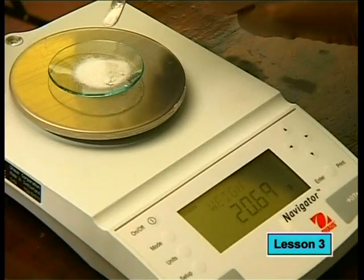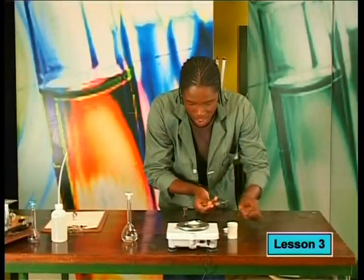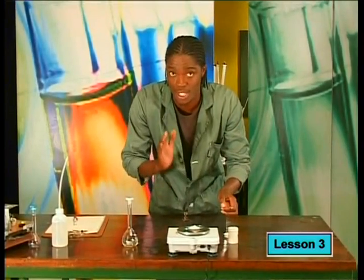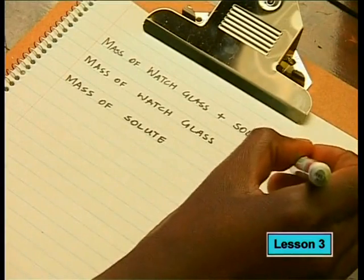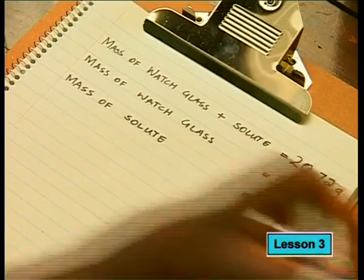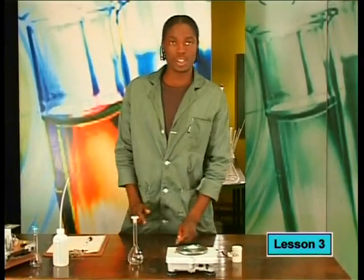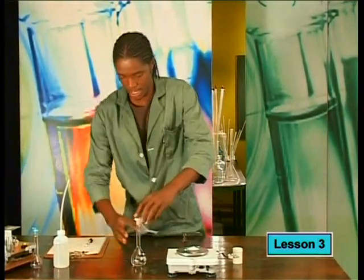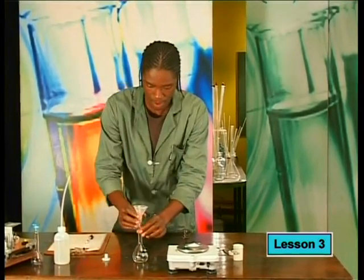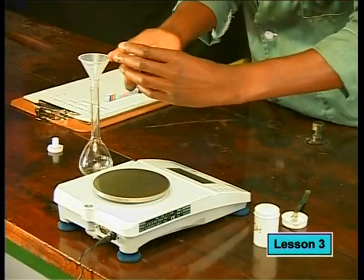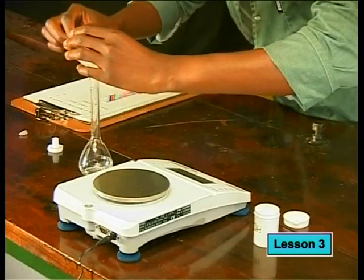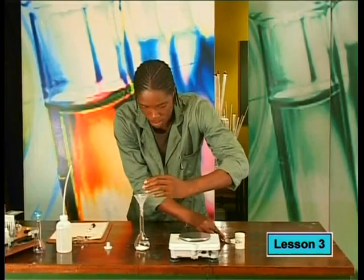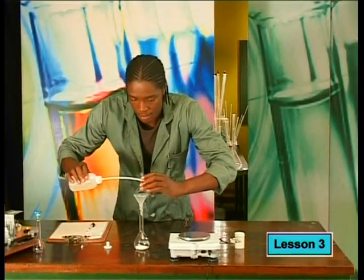I need to get a total of 20.72 grams. The total mass is 20.72, which means I have exactly 4.0 grams of my solute. Next I need to transfer my solute into the flask using a funnel. Remember to be very careful because you don't want a single grain of the solute falling out. I'll use my spatula to put it all in, then rinse my watch glass with distilled water to make sure that every single grain of the solute is inside the flask.